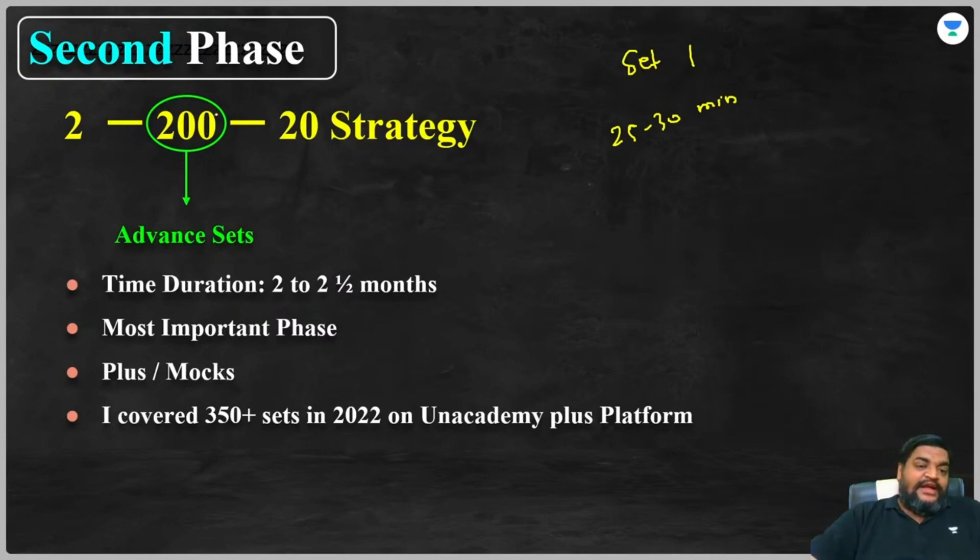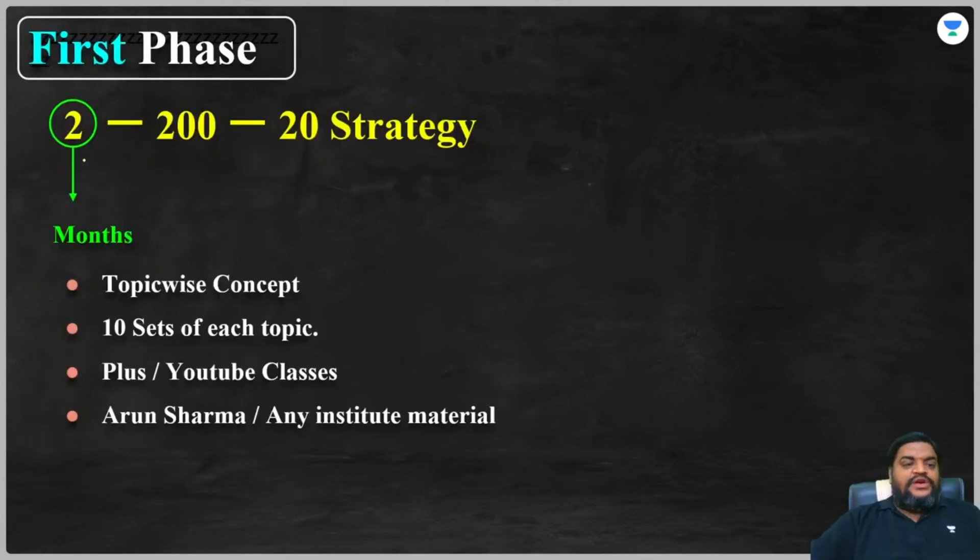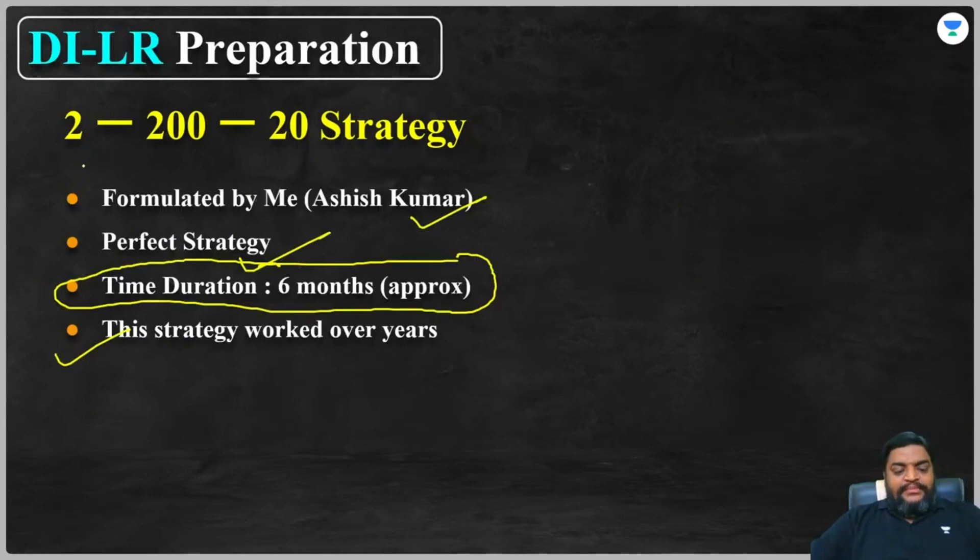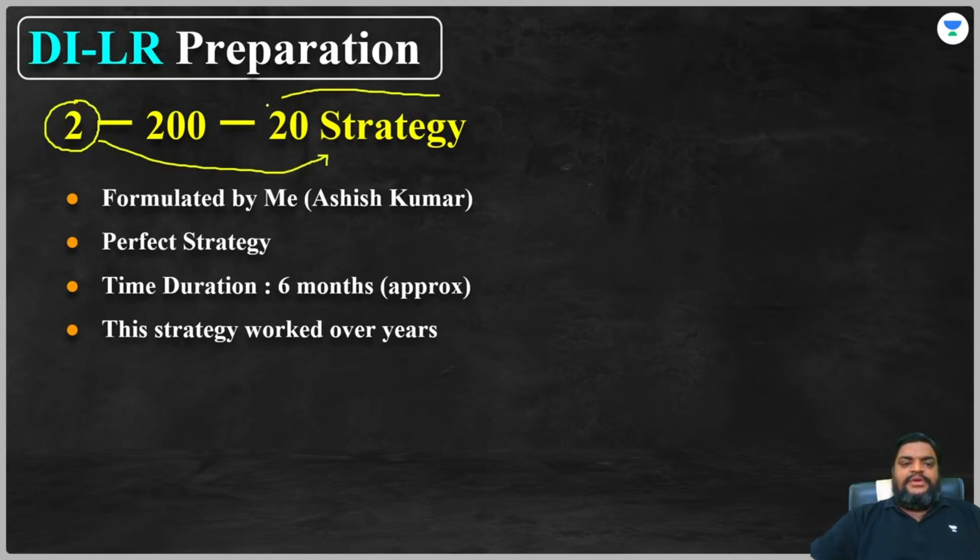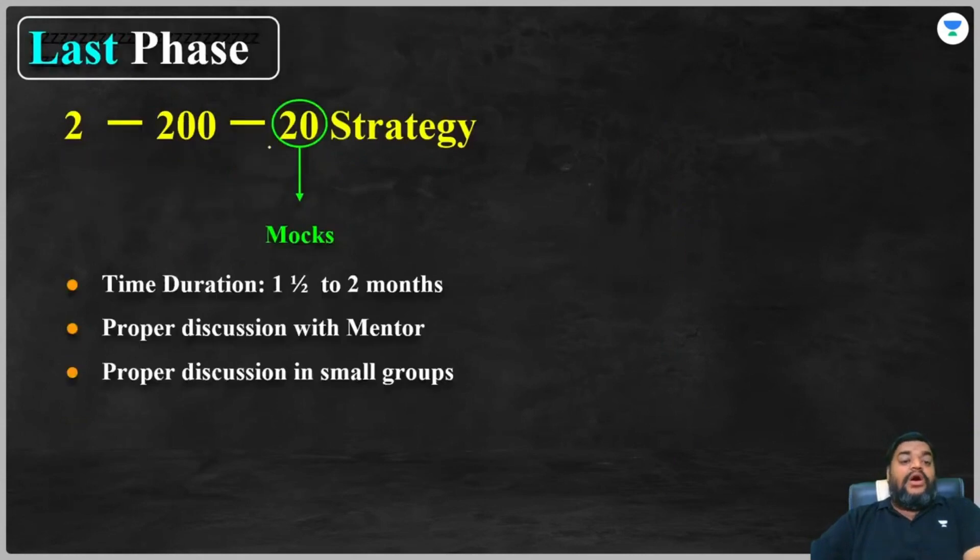This is our second phase, which is 200 advanced sets you need to solve. The ideal time duration is two to two and a half months, and this is undoubtedly the most important phase. What students do, the common mistake, is they directly jump from first phase to third phase. They solve topic-wise questions and they move to the third part.